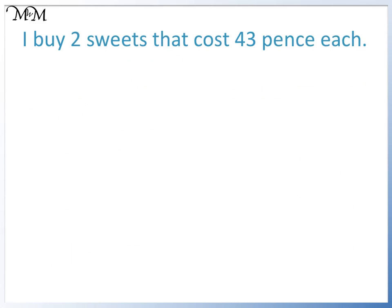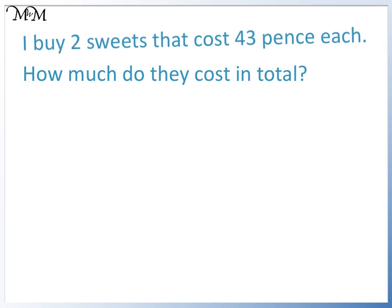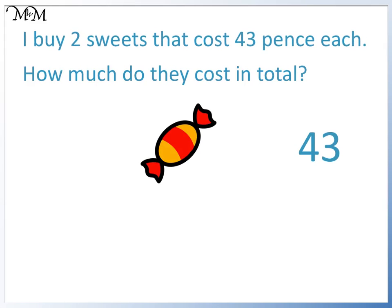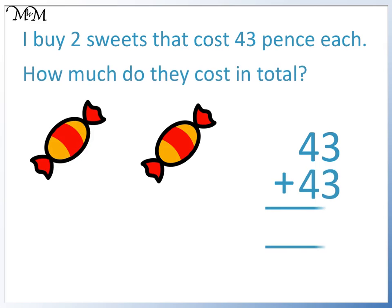I buy 2 sweets that cost 43 pence each. How much do they cost in total? One sweet costs 43 pence and the second sweet also costs 43 pence. To find the total cost, we add the two numbers together. 3 plus 3 equals 6 and 4 plus 4 equals 8. The two sweets cost 86 pence.